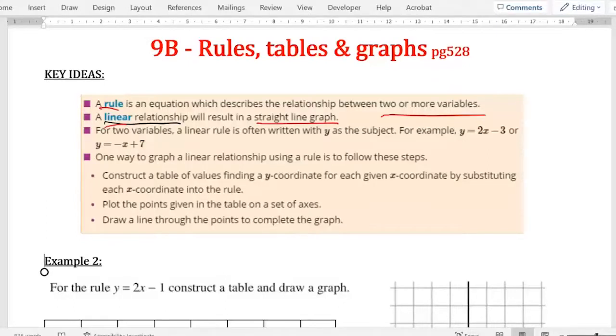So we're going to show you that. For two variables, a linear rule is often written with y as a subject. For example, y equals 2x minus 3, or y equals negative x plus 7. So we say y is the subject because what we're solving for is essentially y.